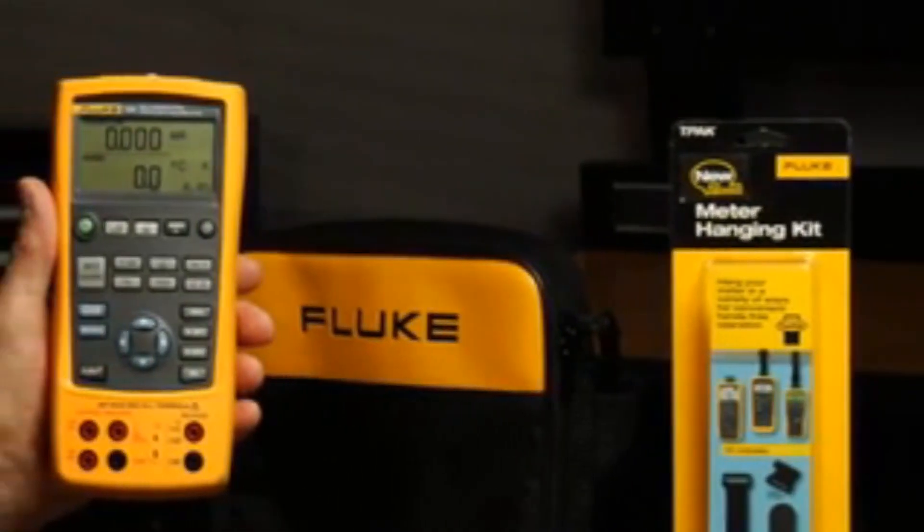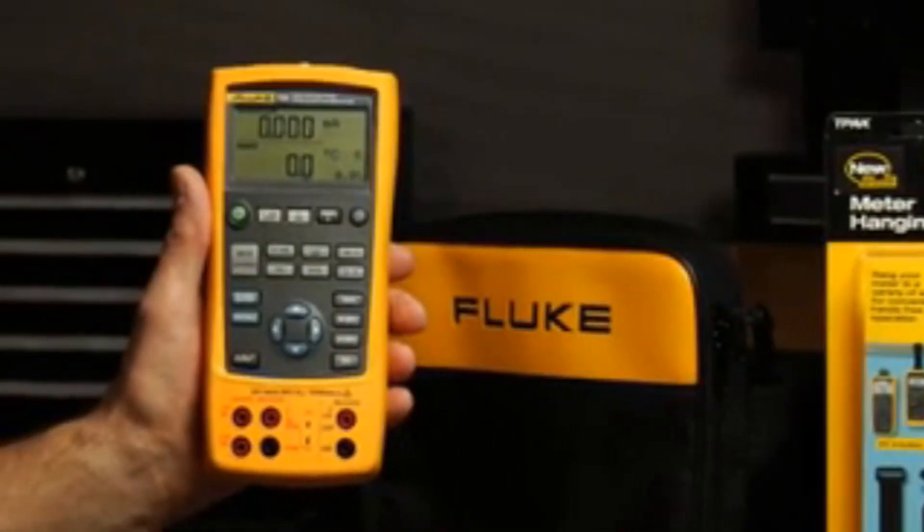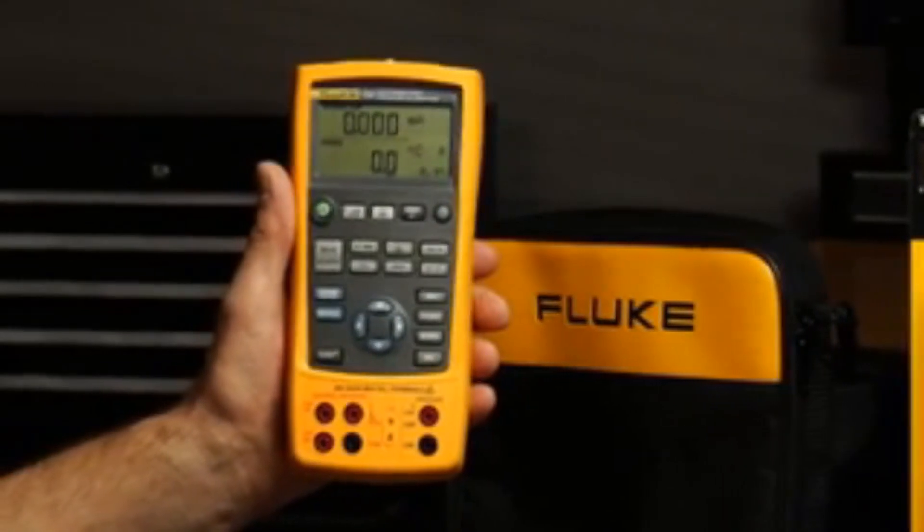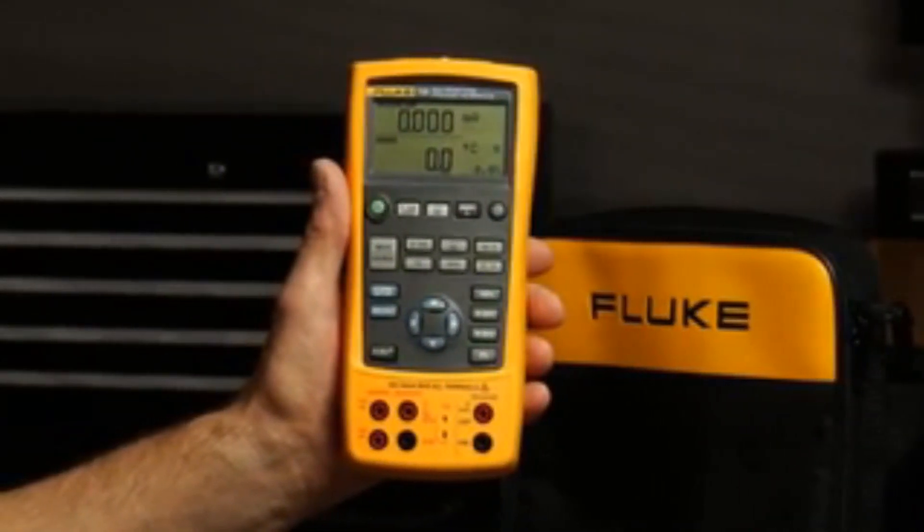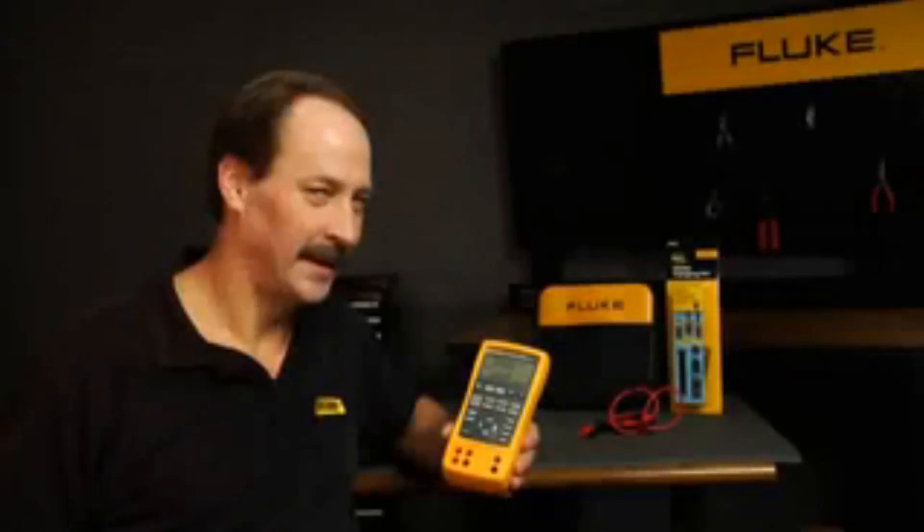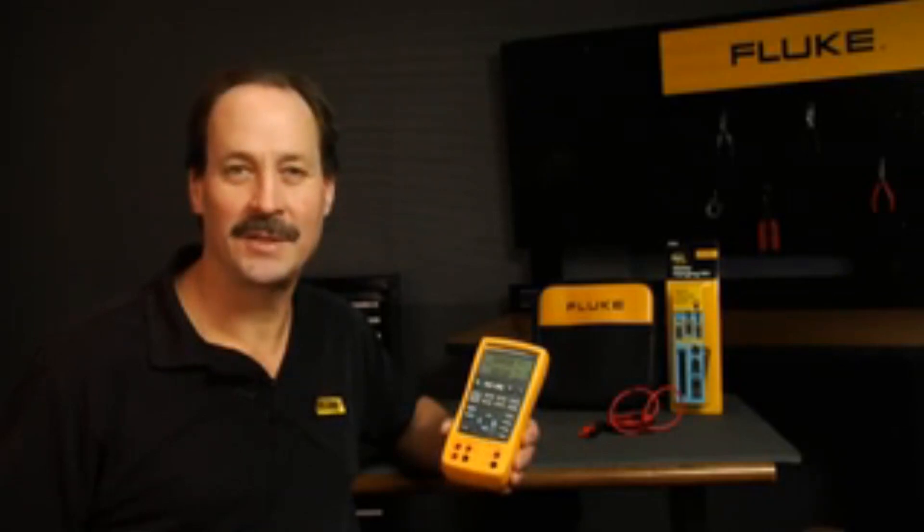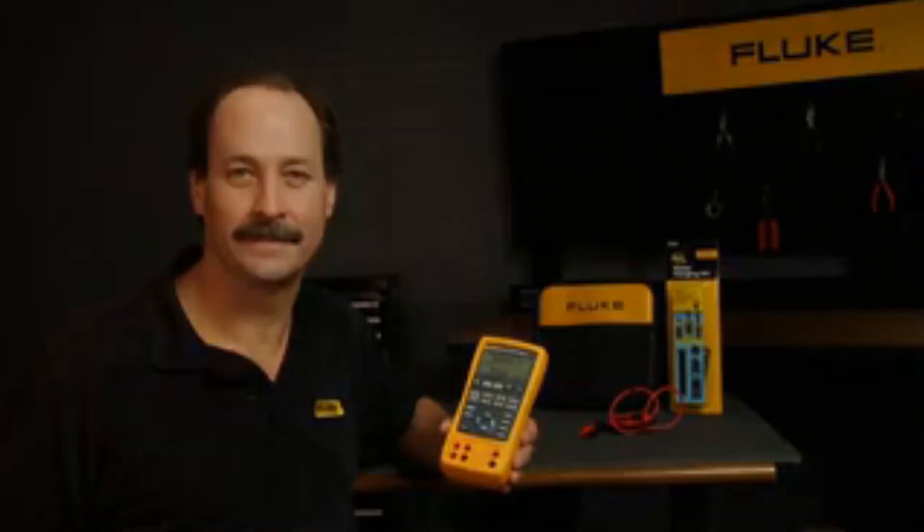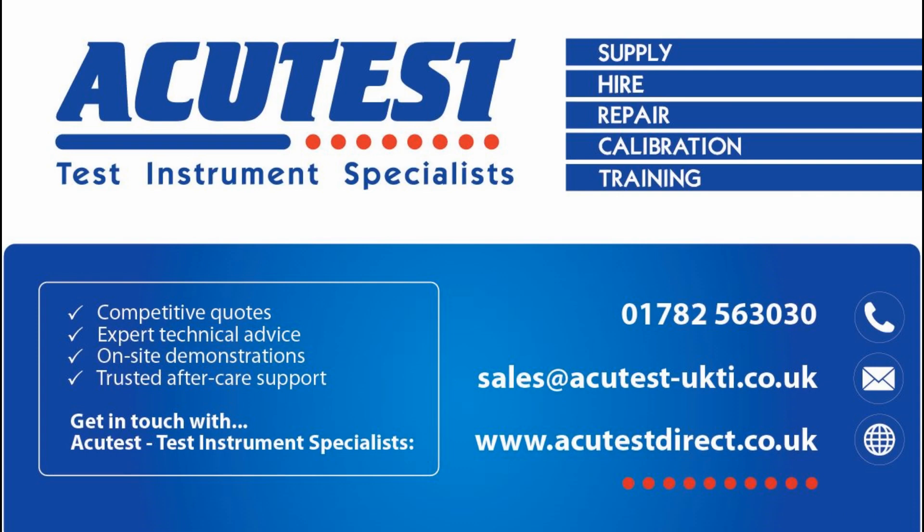With the 725 multifunction calibrator's versatility, you can source and measure almost any process parameter and test almost any process device easily. There you have it. That's the Fluke 725 multifunction process calibrator. I'm Jim Shields and thanks for watching.